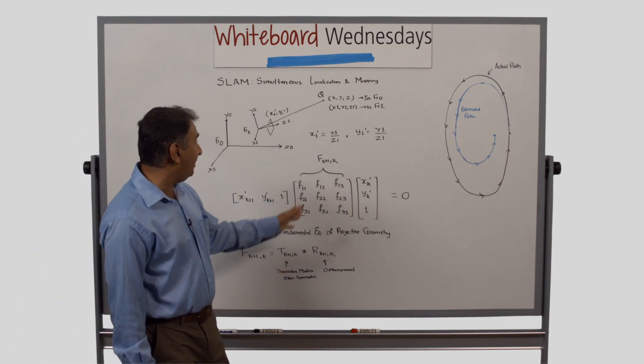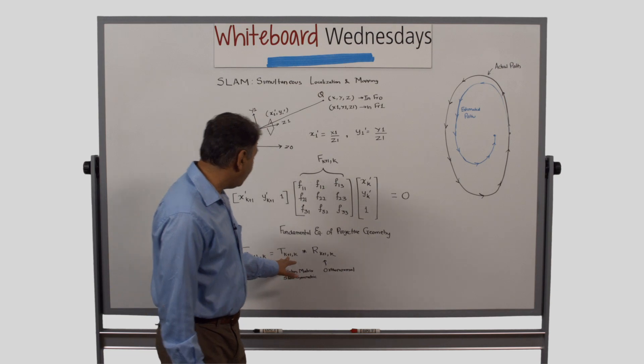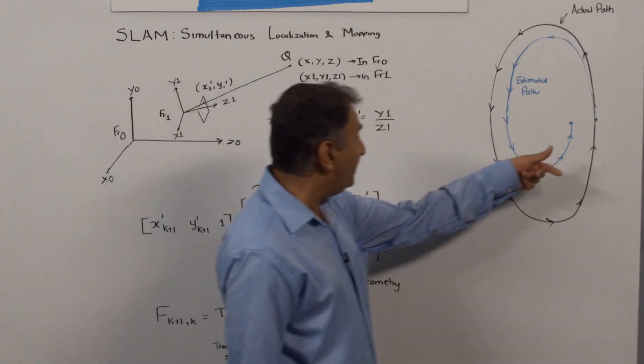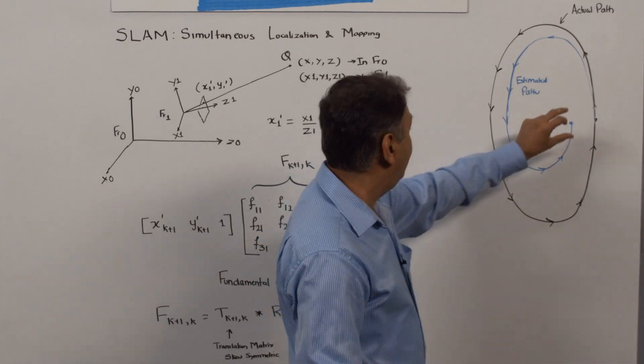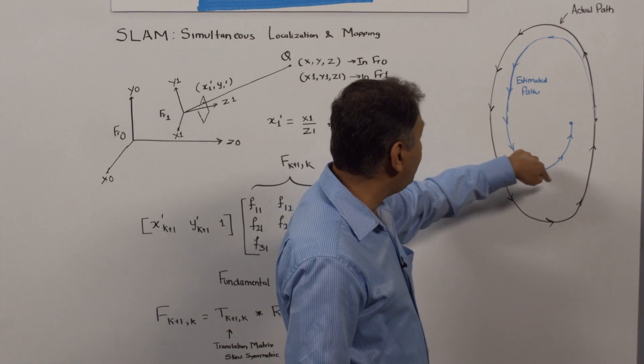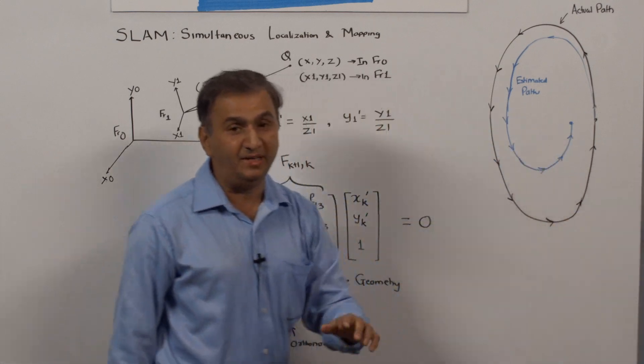The next step in the SLAM is once you get these translation vectors, you piece them together: 0 to 1, 1 to 2, 2 to 3, and create an estimate of the path taken by the camera.